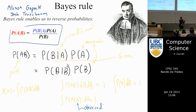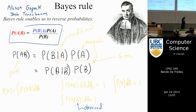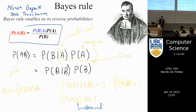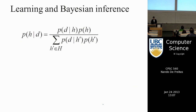Think of it this way: for each country, build a histogram of heights of people and normalize — so each country has a probability distribution over heights. Once you pick a country, the histogram sums to 1. But if you don't know the country either, you also need to sum over countries. Anything to the right of the bar has been observed — it's deterministic. Probability is only needed for things we don't know.